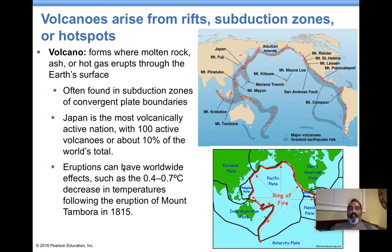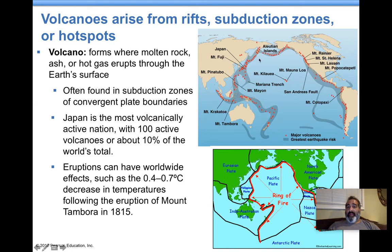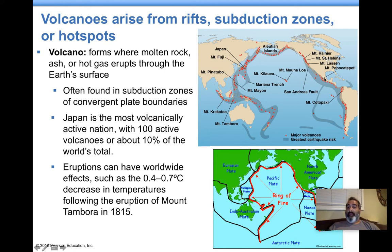Volcanoes usually occur at subduction zones. You need to know that Japan has a lot of volcanism — a lot of volcanoes in that area. You also need to know there's an area at the edge of the Pacific Plate called the Ring of Fire. This area at the edges of the Pacific Plate is where you're going to find a lot of volcanic activity and major volcanoes, as well as earthquake areas. So the Ring of Fire is where you'll find volcanoes and a lot of earthquakes.